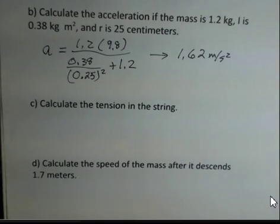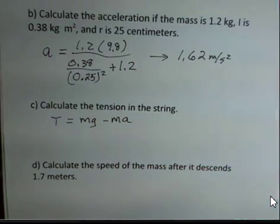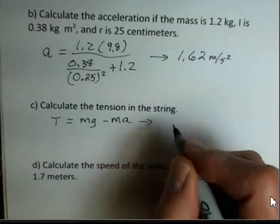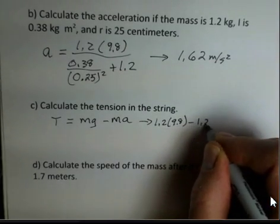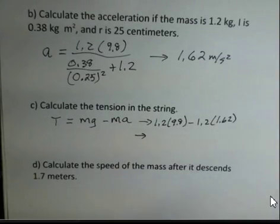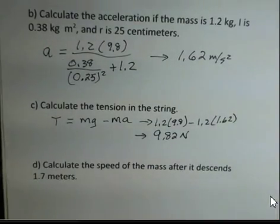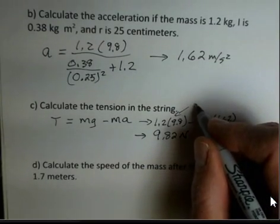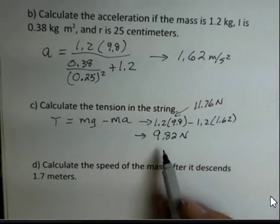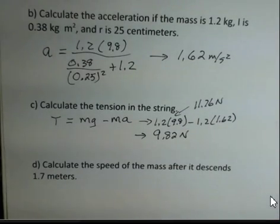What about the tension in the string? Earlier we saw T equals MG minus MA. And that reduces to the calculation of MG 1.2 times 9.8 minus 1.2 times 1.62. I came up with 9.82 Newtons for the tension in the string. And the MG value of this first calculation is 11.76 Newtons. So it is appropriate that the tension in the string is smaller than the weight of the object. That's why the object descends. The upward force is smaller than the downward force.